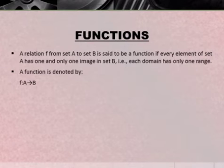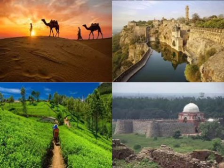What is a function? A relation F from set A to set B is said to be a function if every element of set A has one and only one image in set B. That is, each domain has only one range. Let's understand this topic more with the help of examples from Rajasthan and Assam.